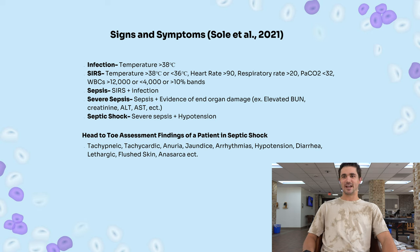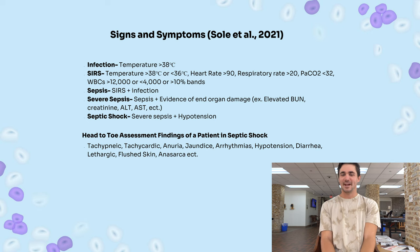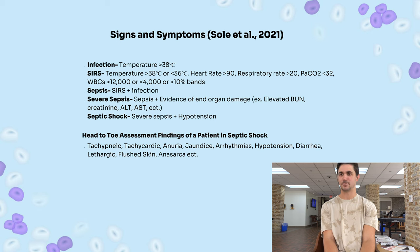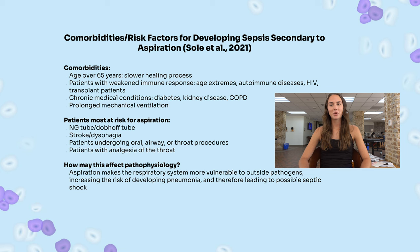End organ damage includes elevated BUN, creatinine, ALTs and ASTs. And then when we get to our septic shock criteria, we have hypotension added in the mix. So when we're doing our head-to-toe assessment, we might find patients breathing very rapidly, heart rate increased, anuric, possibly jaundiced, with arrhythmias, diarrhea, lethargy, flushed skin, and possibly anasarca.